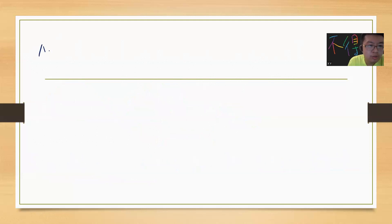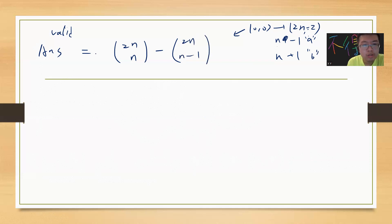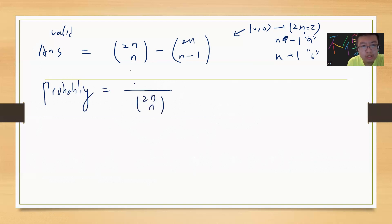If you believe this claim is true, then the number of valid paths is simply C(2n, n) minus the number of invalid paths, where the invalid paths correspond to paths from (0, 0) to (2n, -2). That's the same as choosing n minus one A's and n plus one B's, so C(2n, n minus 1). The probability you're asking about is C(2n, n) minus C(2n, n minus 1), all divided by C(2n, n).